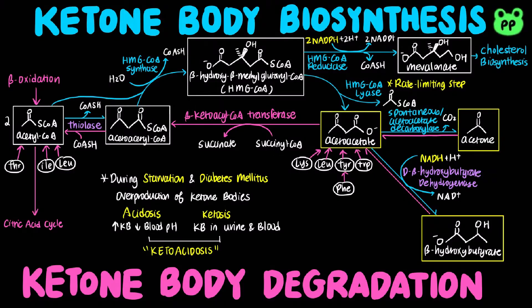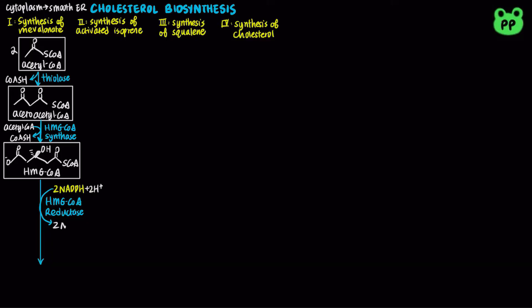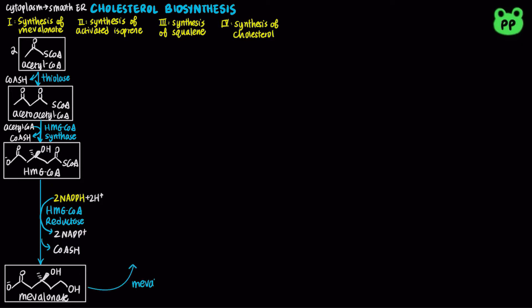As mentioned in a previous video on ketone body metabolism, HMG-CoA is a precursor to ketone body biosynthesis, which involves HMG-CoA lyase. The committed step for cholesterol biosynthesis is HMG-CoA reductase, located on the membrane of the smooth endoplasmic reticulum, which reduces HMG-CoA to mevalinate, coupled to the oxidation of NADPH to NADP+, releasing coenzyme A.